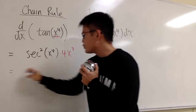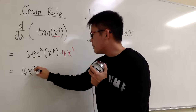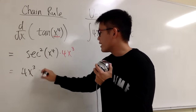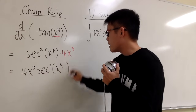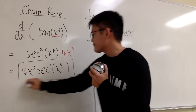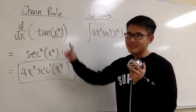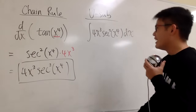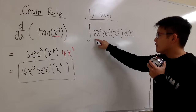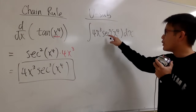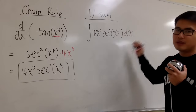At the end, we usually write this part first: 4x to the third power, then secant squared of x to the fourth power — and that's it. We don't need to put a plus c; this is just the derivative. So, how can we integrate 4x to the third power times secant squared of x to the fourth power dx?